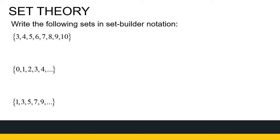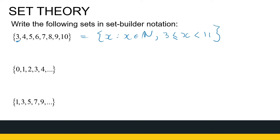If I'm given sets that are tabulated, I can write them in set builder notation. Now it's not a unique representation — we can use different ways to say the same thing. For example, I can say the set of all X's given X is a natural number and X is between 3 and 11. It stops at 10, but that's the first natural number less than 11. Or you could say 3 is included, or between 2 and 11, or from 3 to 10 including both. So there are different ways of representing it.